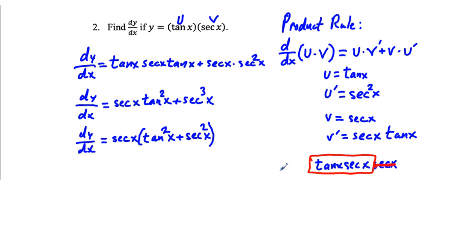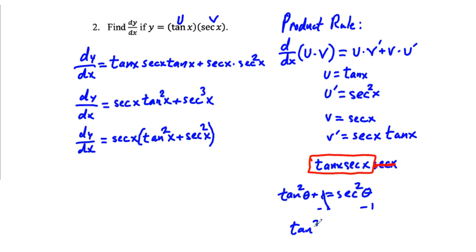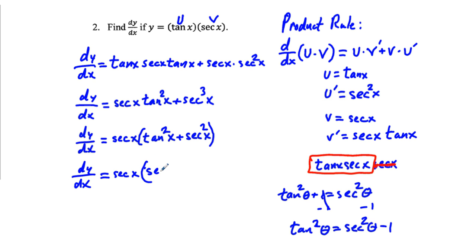The Pythagorean identity states that tangent squared theta plus 1 equals secant squared theta, which means tangent squared theta equals secant squared theta minus 1. We can replace tangent squared x with secant squared x minus 1, giving dy/dx equals secant x times the quantity secant squared x minus 1, plus secant squared x.